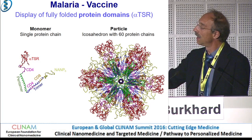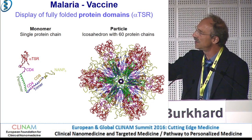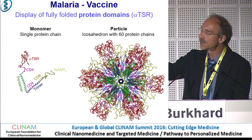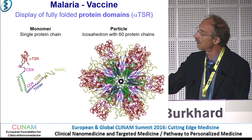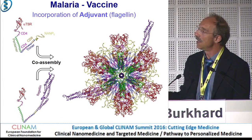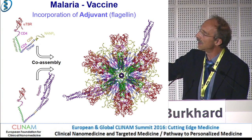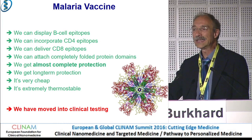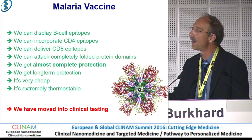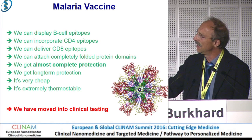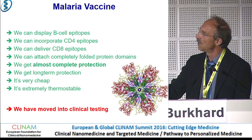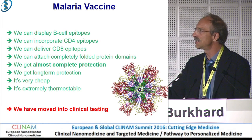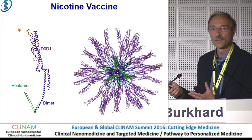For our malaria vaccine, we take the concept with the pentamer and the trimer again. We attach two different B-cell epitopes: the NANP region of CSP and the alpha-TSR region of CSP — and pay attention, here we have a fully folded protein that is displayed on the particle. If we engineer flagellin onto it, on average two flagellin molecules are incorporated. We are currently testing this in a clinical trial — an ongoing effort expected to finish in about one year. We can display B-cell epitopes, incorporate T-cell epitopes (CD4 and CD8), and attach completely folded protein domains. We get almost complete protection, long-term protection, it's very cheap, and it's extremely thermostable — exactly what you would look for in a malaria vaccine.